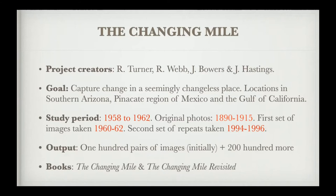The original photos were taken from 1890 to 1915. They repeated these photographs between 1960 and 1962, then came back 30 years later and repeated them again — two sets of repeats for one original photograph. Initially they dealt with 100 pairs of images, and when they came back 30 years later they added 200 more to their collection. The output was two well-known books: The Changing Mile and The Changing Mile Revisited.